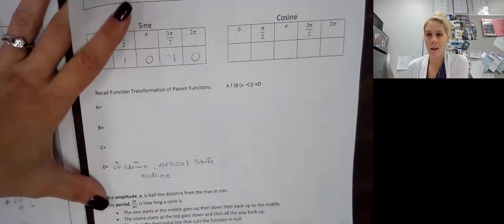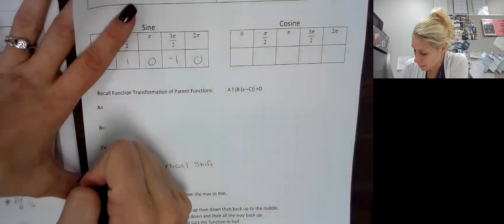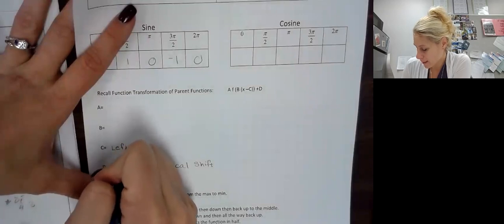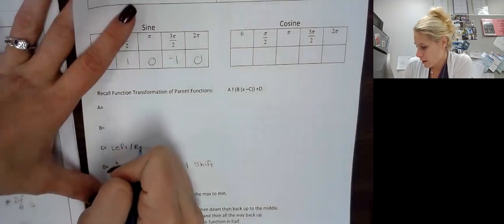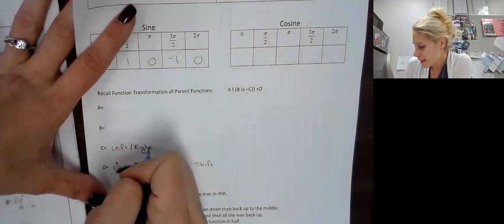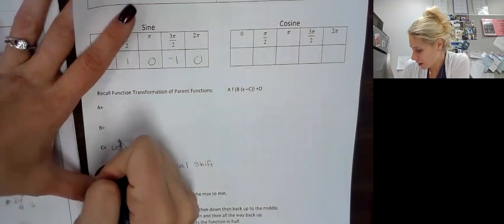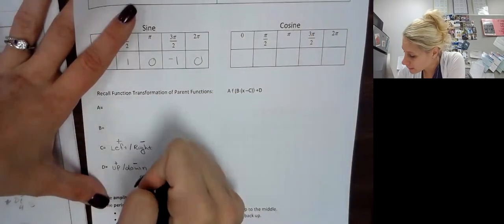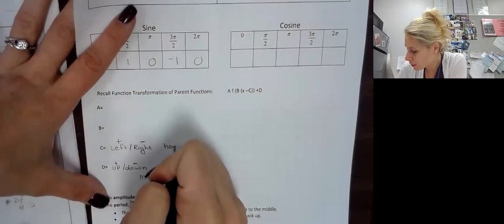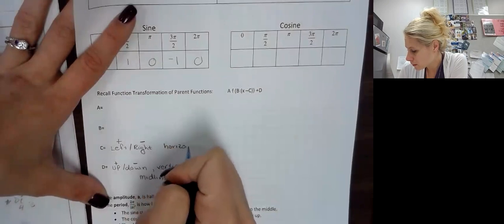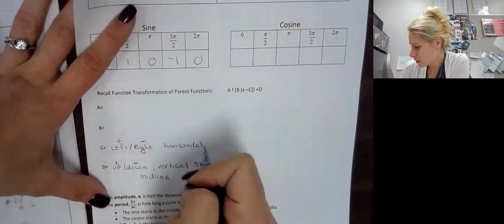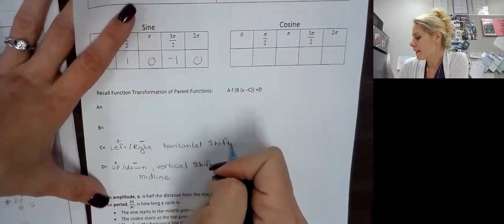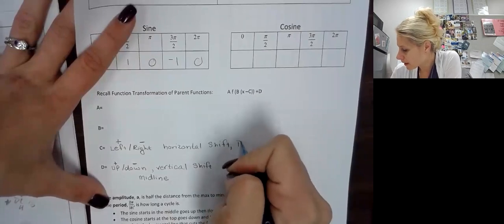The next one is left and right. But if you remember correctly, we have to do the opposite on the inside. So left is actually the addition and right is the subtraction. This is a horizontal shift. With our trig functions, this is what we call a phase shift.